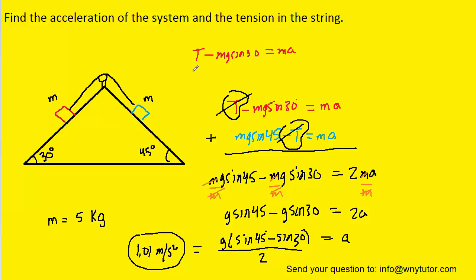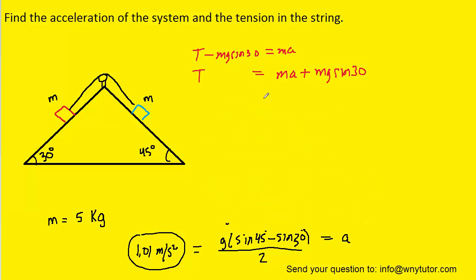So we'll have ma plus mg sine 30. We can perhaps factor out the mass, so that we'll have the acceleration plus g sine 30.